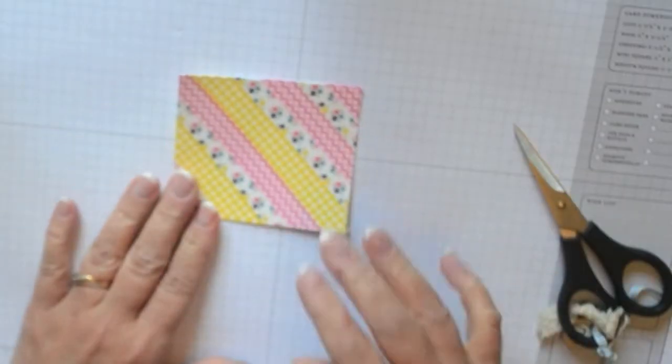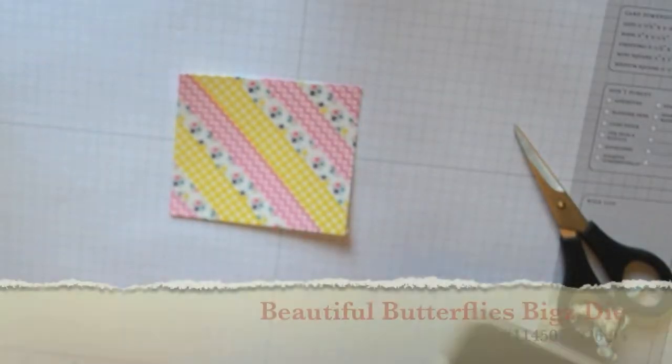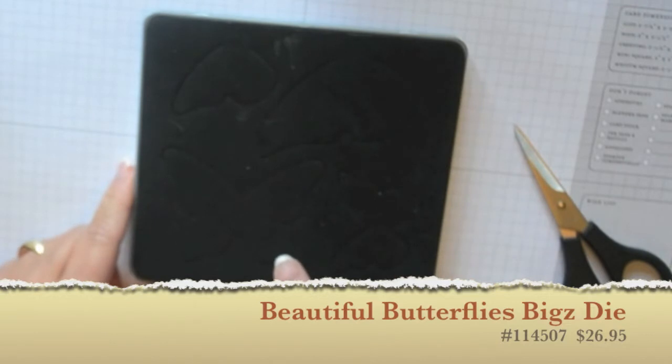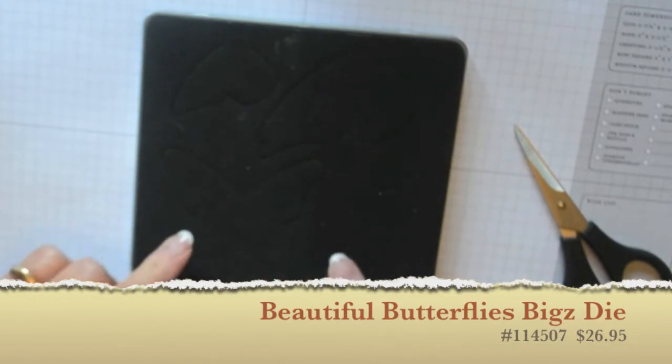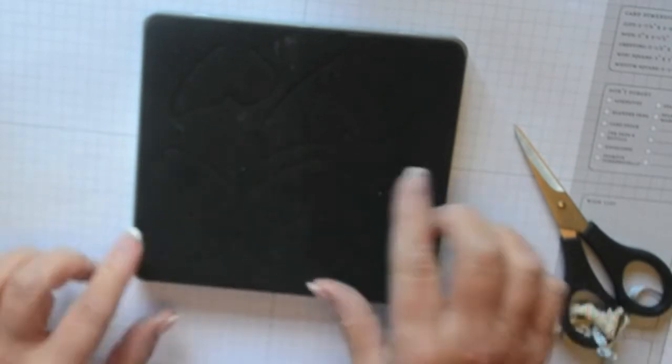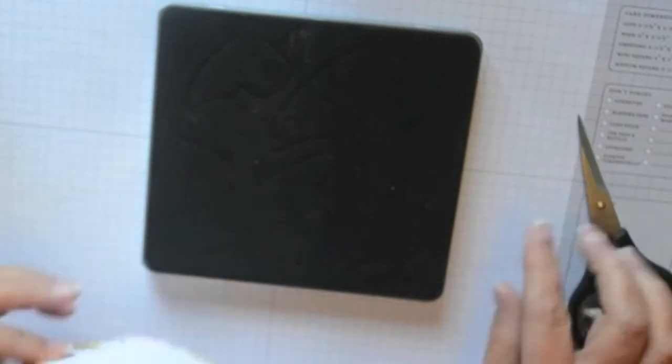So then you've got this piece. I'm going to take this piece and this is the die that I'm going to use. This is called the Beautiful Butterfly die and it's for the big shot and I'm going to use this butterfly that's here. Hopefully you can see that. This video is not going to be as good as usual. My apologies.